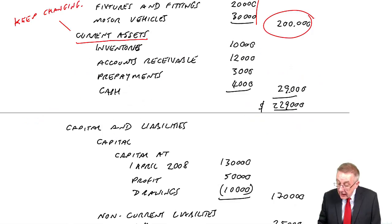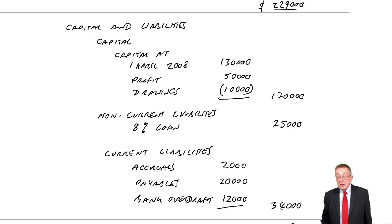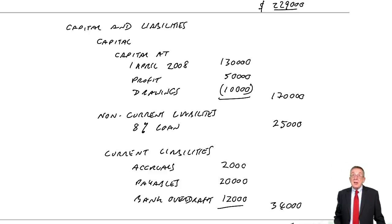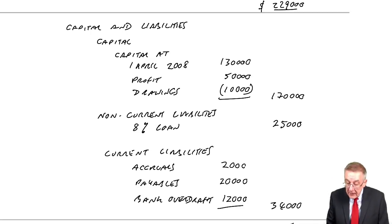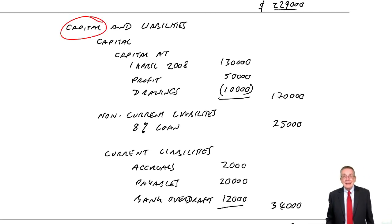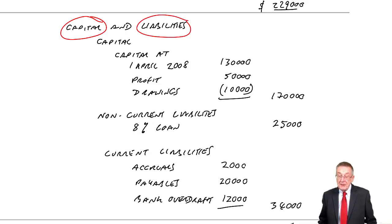Now, below we list what the business owes. The business — think back to the previous lecture — they owe money to the owner, the capital, and they owe money to other people, the liabilities.